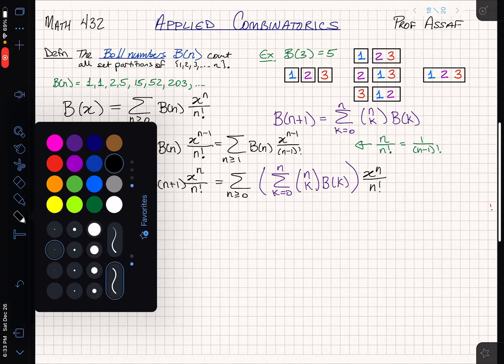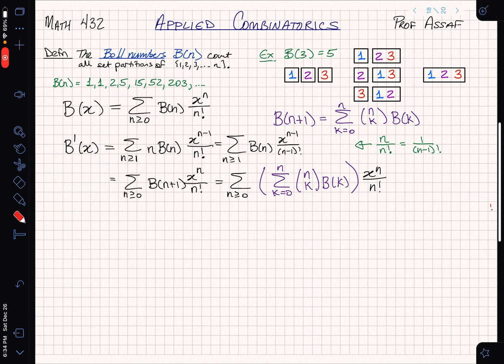So that's what I'll do next. I'll plug in the recurrence. This is the sum from k equals 0 to n of n choose k, B(k), and of course I need to keep the x to the n over n factorial. Now that I have this, I can say, okay, well what could I possibly do with this side?